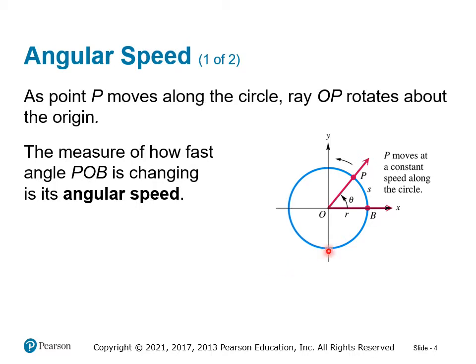As point P moves along the circle, what's happening is the angle theta is increasing as we go around. If we keep going around, like going around once, theta equals 2π. If we go around twice, theta equals 4π. So theta can be more than 2π because we may go around a number of times.